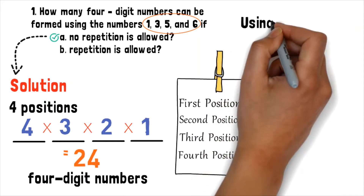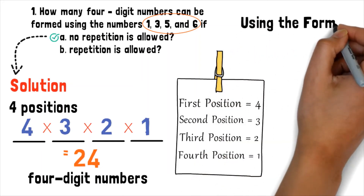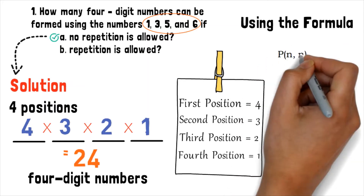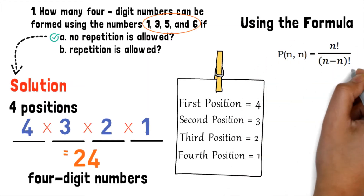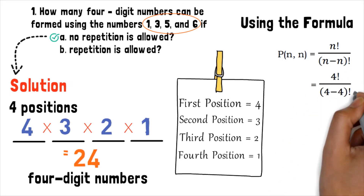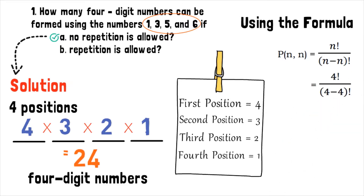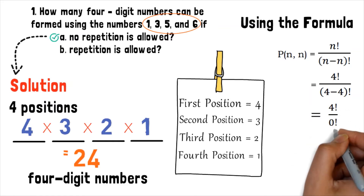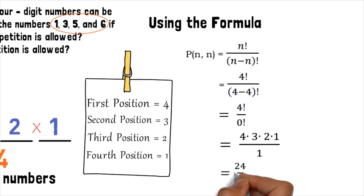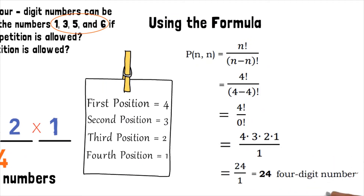For an alternate solution, we use the formula n factorial divided by (n minus n) factorial. Since n equals 4, we have 4 factorial divided by (4 minus 4) factorial. Evaluating this further gives us the answer 24. So there are 24 four-digit numbers that can be formed — the same result as our first solution.